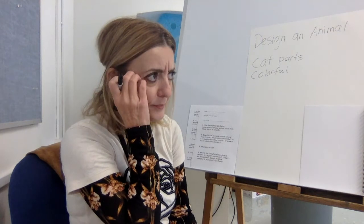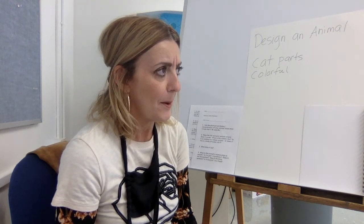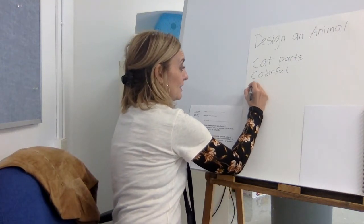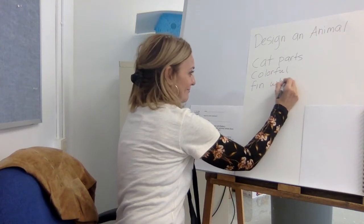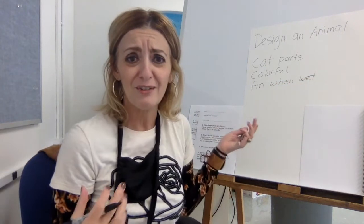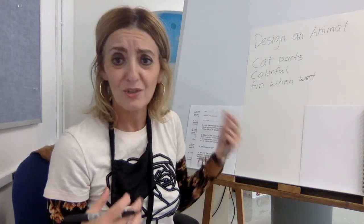Do I want my animal to have a tail? Four legs? Maybe I want it to be like a mermaid — you know, like Ariel in The Little Mermaid, where she has human feet but gets a tail in the water. So maybe it has fins when wet. You see, I'm generating ideas — these are my ideas, yours would be different.